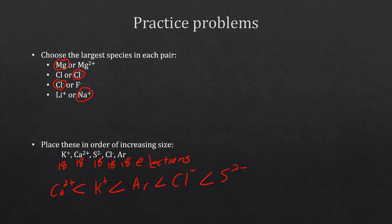These are the types of questions about trends related to ions. Some questions, like comparing ions of the same charge in different positions on the periodic table, work the same way as atomic size. Others require you to think about the effect of adding or subtracting electrons.